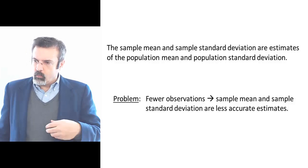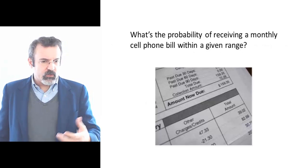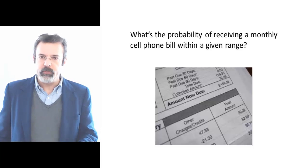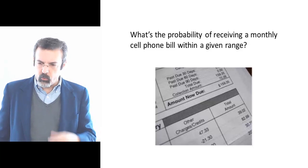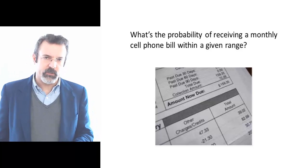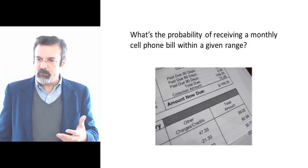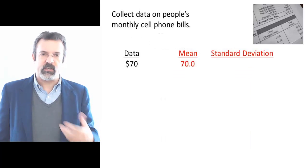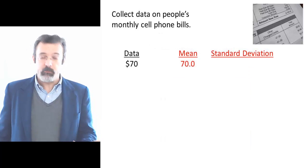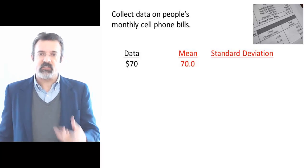Consider this example. We want to estimate the probability of someone receiving a monthly cell phone bill in certain ranges, so we begin by collecting data on monthly cell phone bills. The first person we ask tells us his bill last month was $70. With one observation, the sample mean of our data is 70.